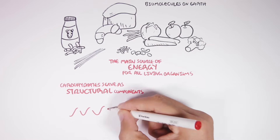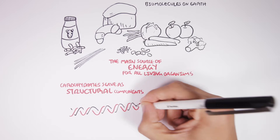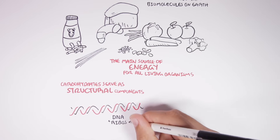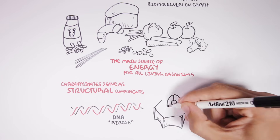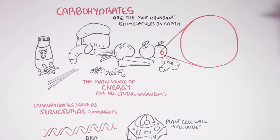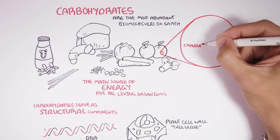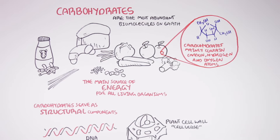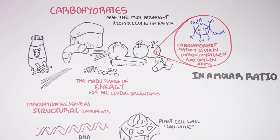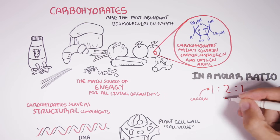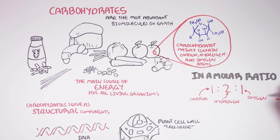For example, DNA contains the carbohydrate ribose, and plant cell walls are made up of the carbohydrate cellulose. Carbohydrates mainly contain carbon, hydrogen, and oxygen atoms in a molar ratio of 1:2:1 — one carbon, two hydrogens, and one oxygen.